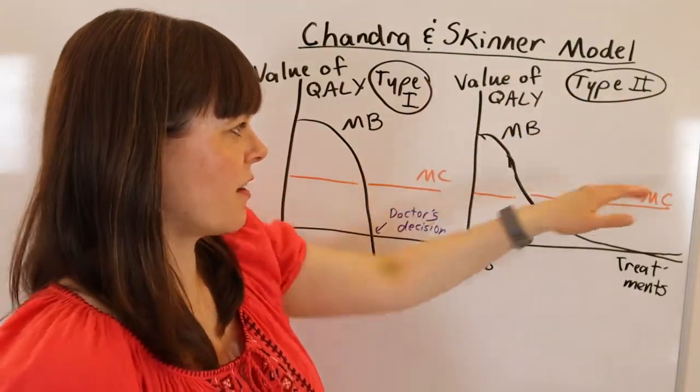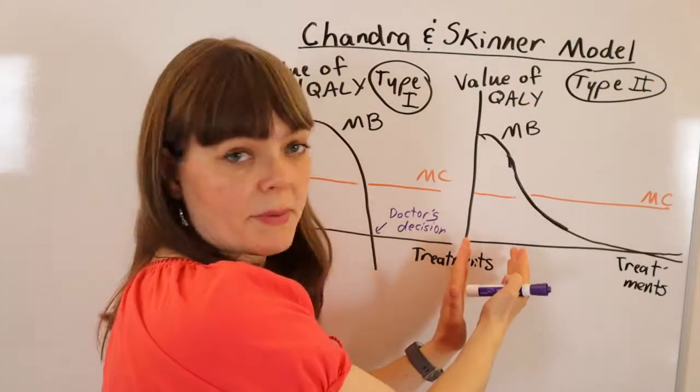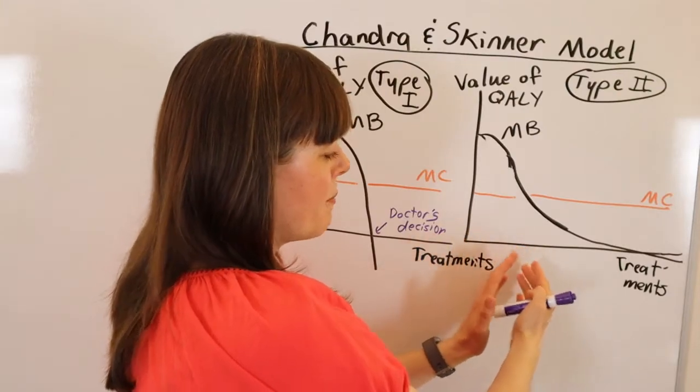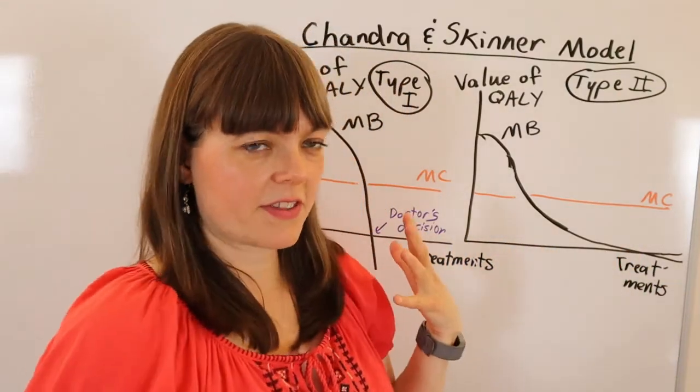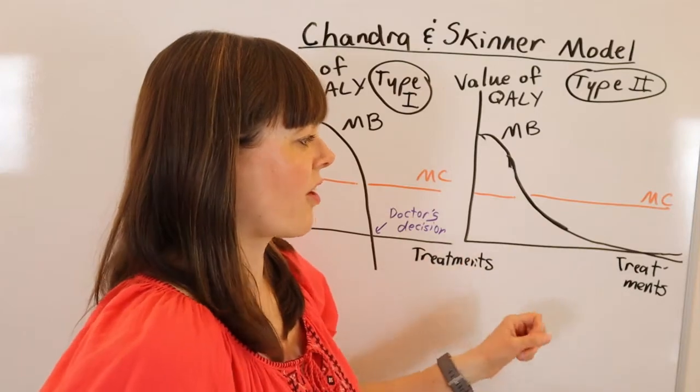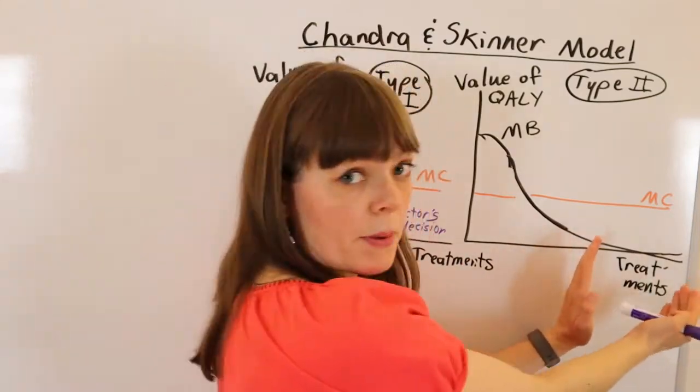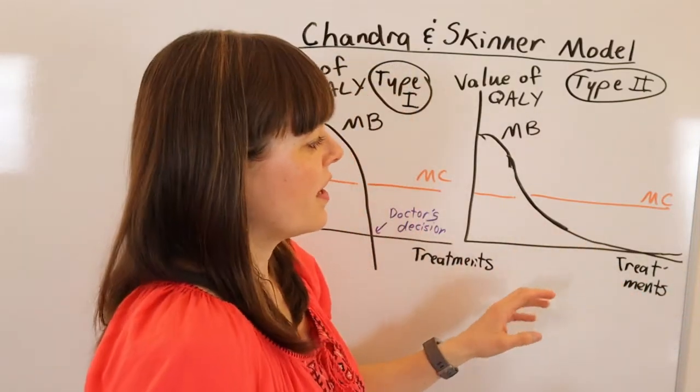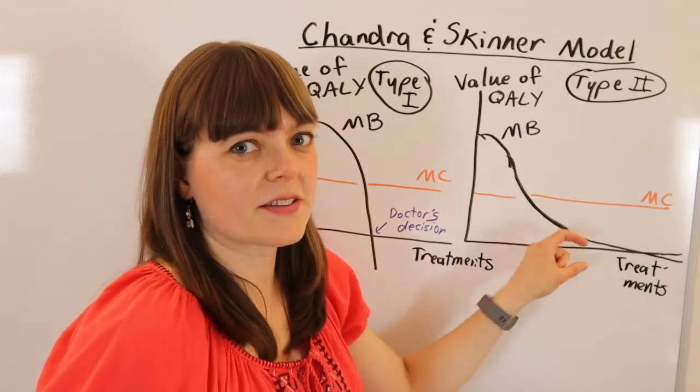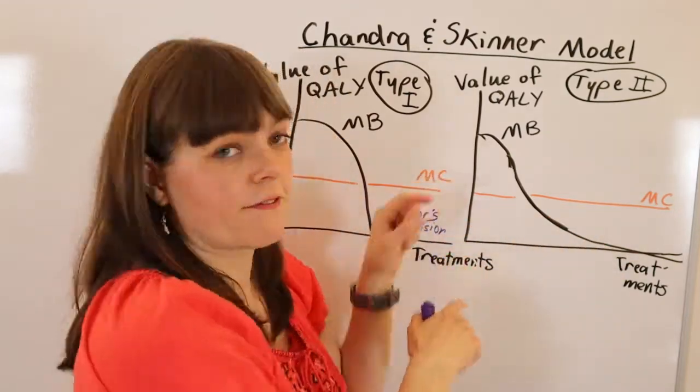Whereas for type 2 technologies, the technology is really beneficial for some people, but there's a lot of people for whom the benefit of the technology doesn't outweigh the cost, and perhaps a lot of people who are getting the technology even when the marginal benefit is very low and the technology is fairly expensive.